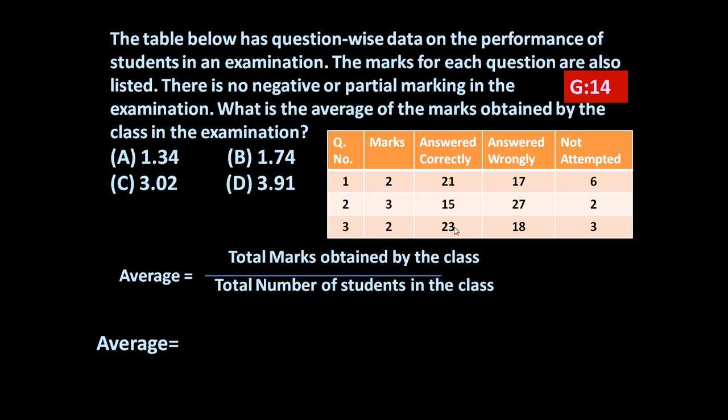Only these questions are correctly answered. If 21 students answered correctly but each question is of 2 marks, so it is 21 into 2. Marks scored on question number 1 are 2 into 21. Total marks scored for question number 2, it is of 3 marks and 15 students attempted it correctly, so 15 into 3. These are the total marks scored by question number 2. Now question number 3, marks 2, and 23 students answered it correctly, so scored is 2 into 23.